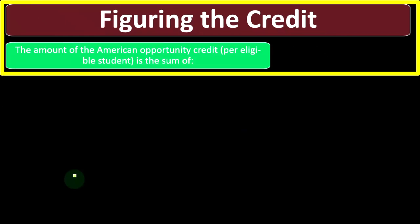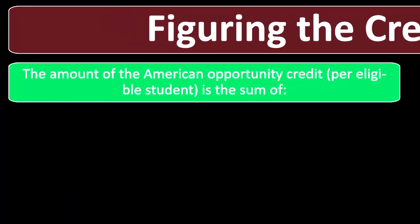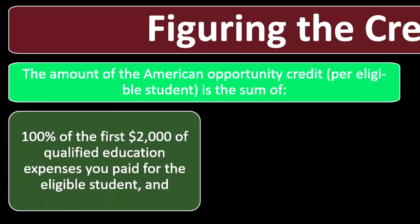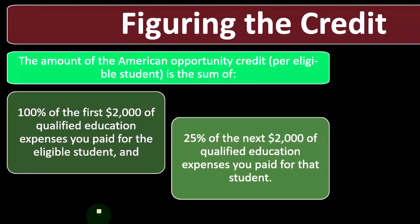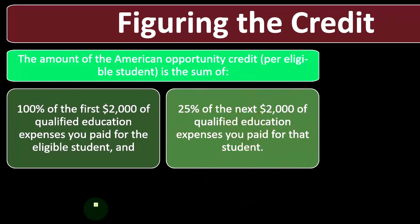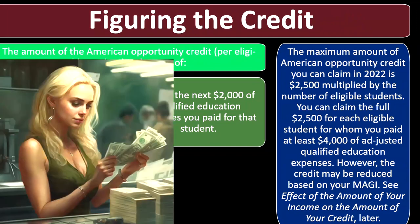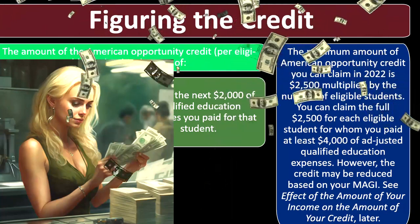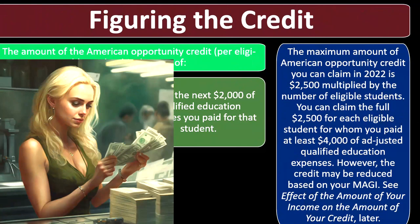We're on the American Opportunity Credit. The amount of the American Opportunity Credit per eligible student is the sum of 100% of the first $2,000 of qualified education expenses paid for the eligible student, and 25% of the next $2,000 of qualified education expenses paid for the student. So when thinking about your expenses, we compile them together — we talked about what qualifies as an education expense — and we get 100% of the first $2,000.